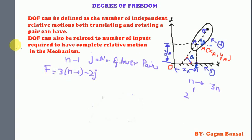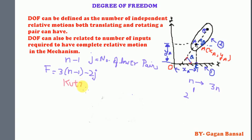In this equation, F is the degree of freedom, n is the number of links, and j is the number of lower pairs — also written as the total number of binary joints. This equation, F = 3(n−1) − 2j, is known as the Kutzbach equation.